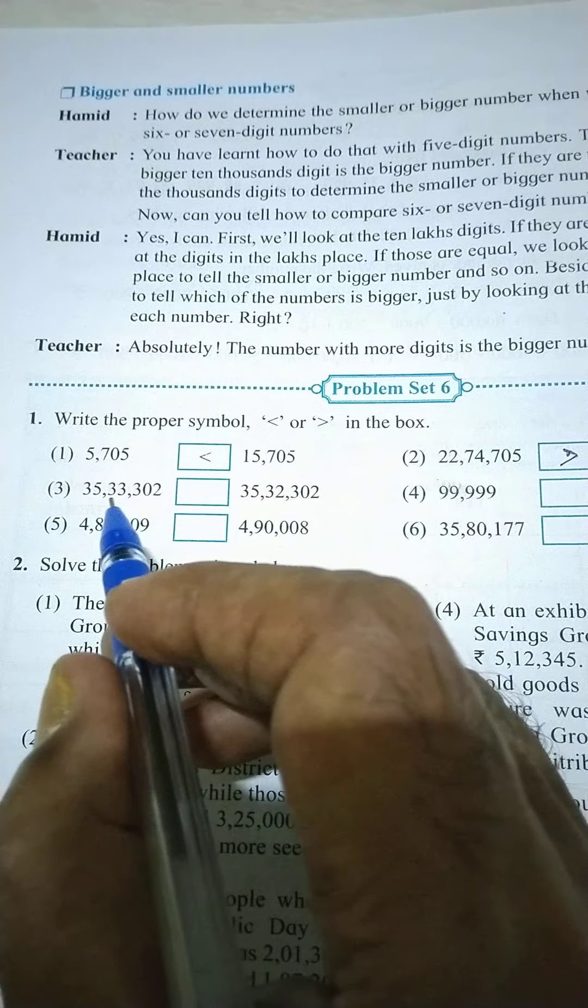Right! Teacher: Absolutely, the number with more digits is the bigger number. Problem Set Number 6: Write the proper symbol.